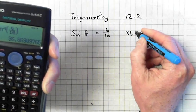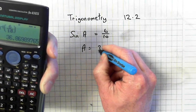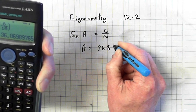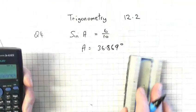So the angle is, so A is equal to 26.869 degrees.